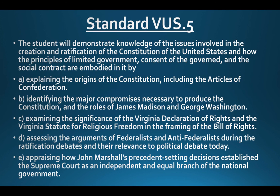The standard covers: A) explaining the origins of the Constitution, including the Articles of Confederation; B) identifying the major compromises necessary to produce the Constitution and the roles of James Madison and George Washington; C) examining the significance of the Virginia Declaration of Rights and the Virginia Statute for Religious Freedom in the framing of the Bill of Rights; D) assessing the arguments of Federalists and Anti-Federalists during the ratification debates and their relevance to political debate today; and E) appraising how John Marshall's precedent-setting decisions established the Supreme Court as an independent and equal branch of the national government.